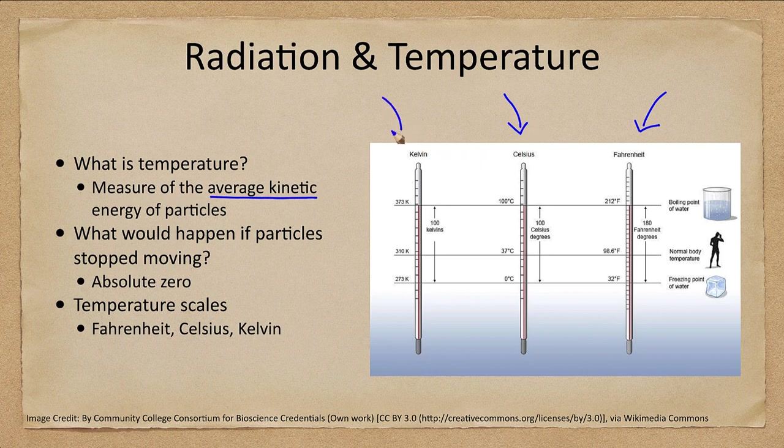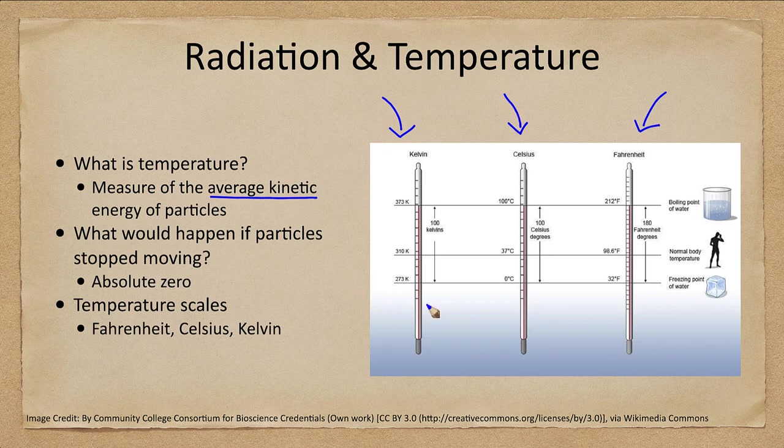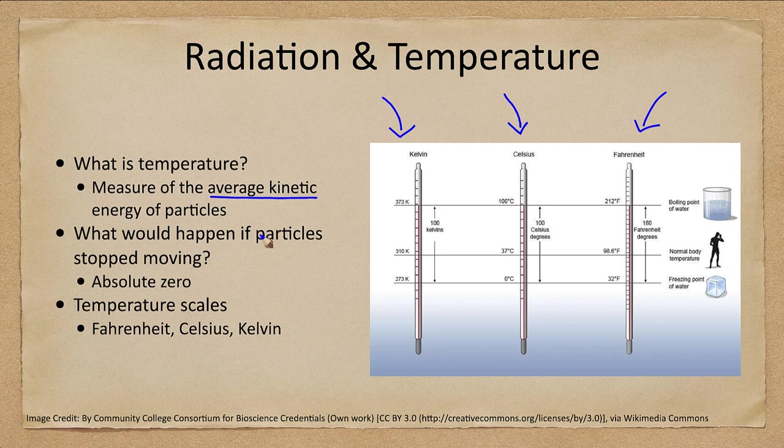In astronomy, we use the Kelvin scale more often. And that is the Kelvin scale that is based on the absolute zero. There is a lowest possible temperature that you can get, and that's because the temperature is measuring the velocity of the particles, their average energy of motion.